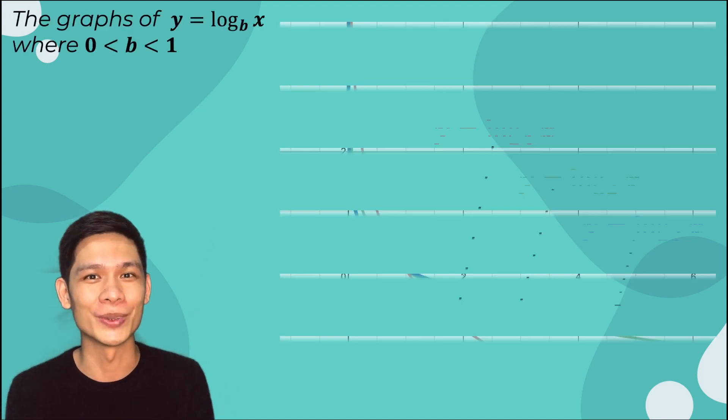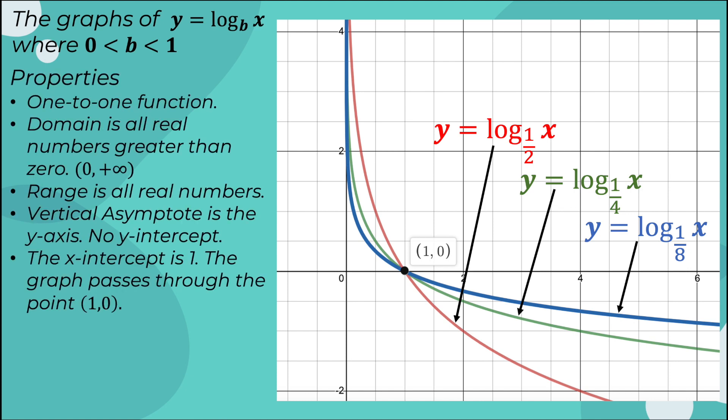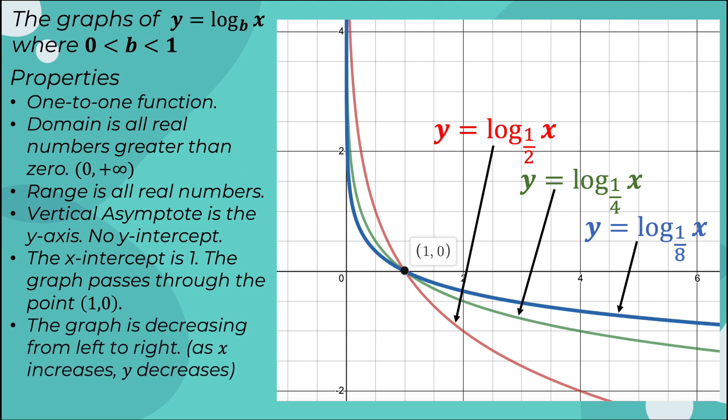Here is a summary of the properties of the graphs of f(x) = log base b of x where b is between 0 and 1. These properties are almost the same as those where b is greater than 1, except for the last one: the graph is decreasing from left to right, meaning as x increases, y decreases.